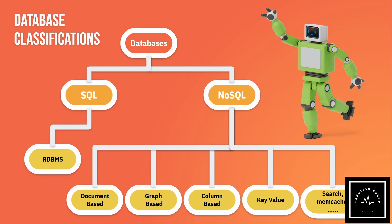For SQL, RDBMS — Relational Database Management System — is the traditional database system with tables, rows, and columns in a defined structure. That is RDBMS.